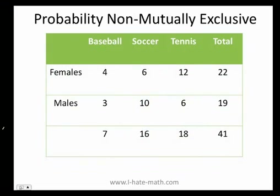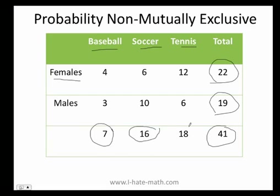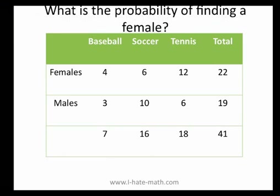Now sometimes they can give you problems like this. Let's say you are at a party and you have 41 people who are females and males, and all of these people are sport fans. We're going to have baseball, soccer, and tennis. In total we have 22 females and 19 males, giving a total of 41 people. We have 7 people who like baseball, 16 who like soccer, and 18 who like tennis.